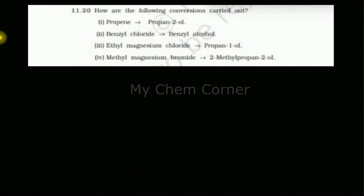The first one is propene to propan-2-ol, so this is a very simple one. First, we'll draw the structures of what is given to us. We need to convert propene to propan-2-ol. This is the structure of the product and the reactant, so I have propene to propan-2-ol.